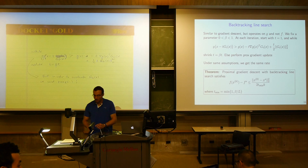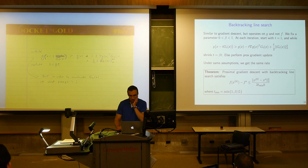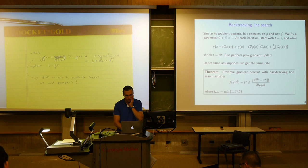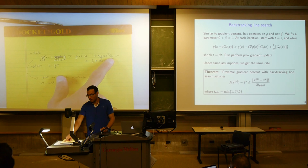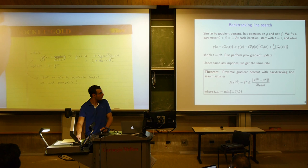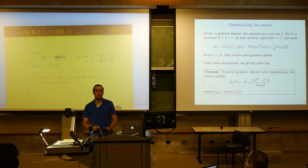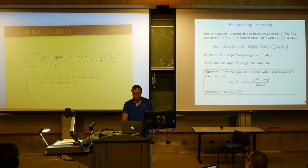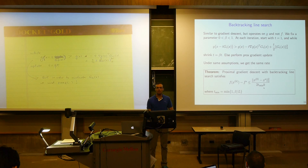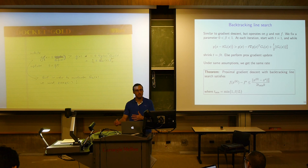There may be some approximate backtracking heuristics that don't require evaluating the generalized gradient each time — perhaps keeping the original generalized gradient and scaling it down appropriately. I'm not super familiar with them. The conclusion, though, is that if we use backtracking, we get the same convergence rate. The proof is still very similar, just like the proof for backtracking in gradient descent was similar to the fixed step size proof.